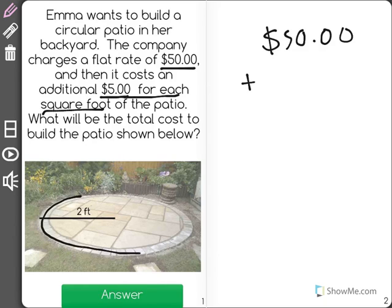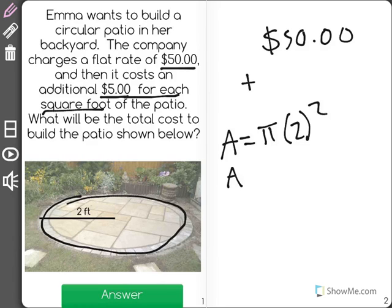I can see her patio is a circle, and it has a radius of 2. So the area of that would be pi times 2 squared, or 4 pi.